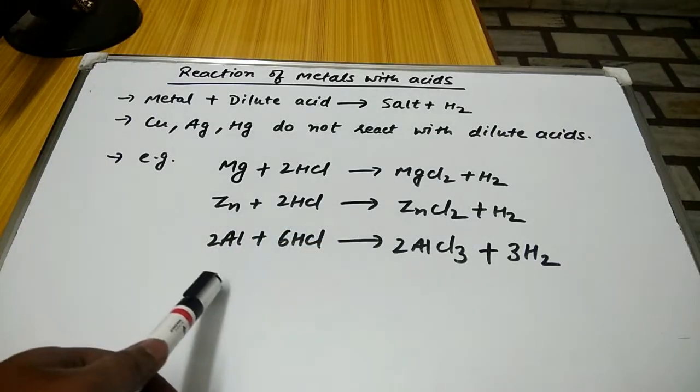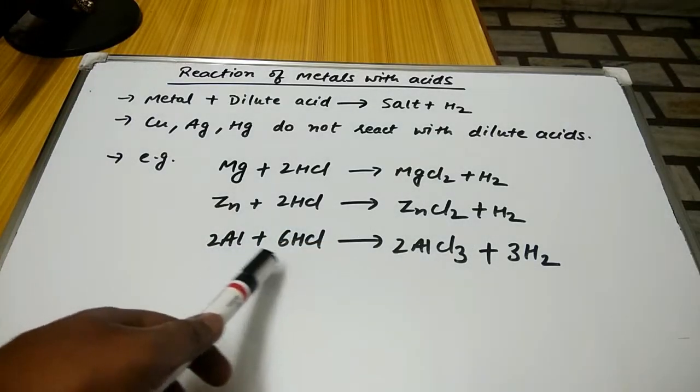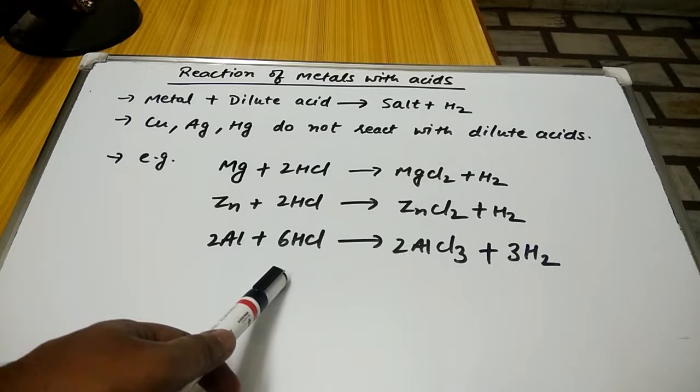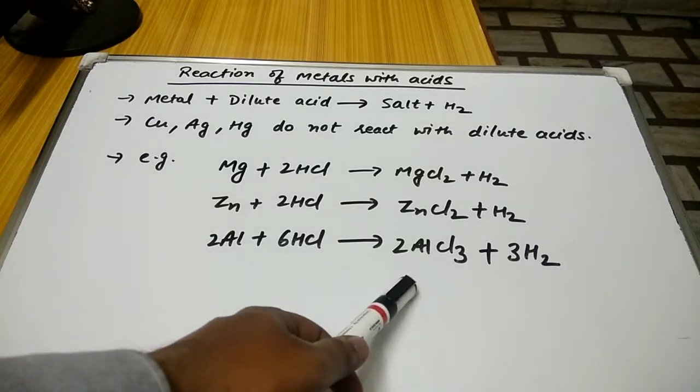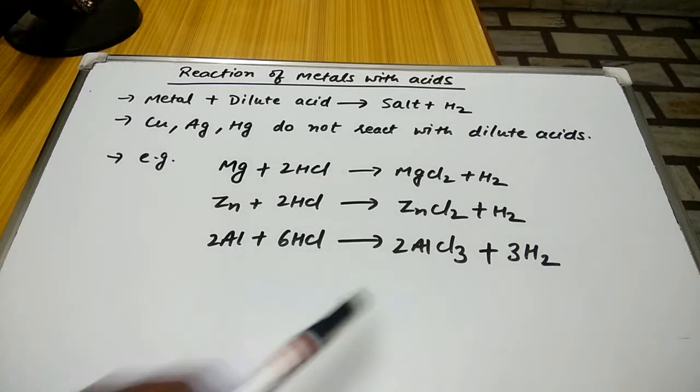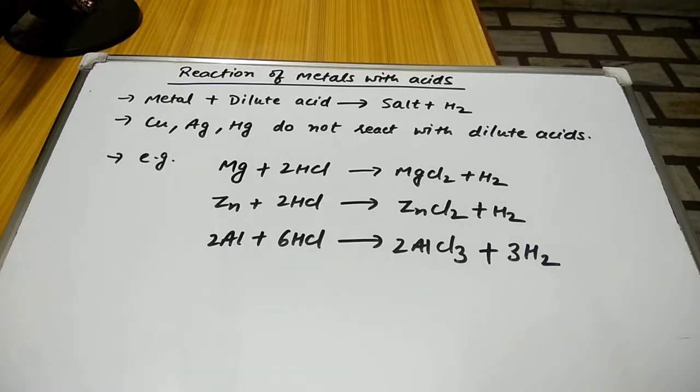For example, aluminium and hydrochloric acid gives aluminium chloride and hydrogen gas. Simple.